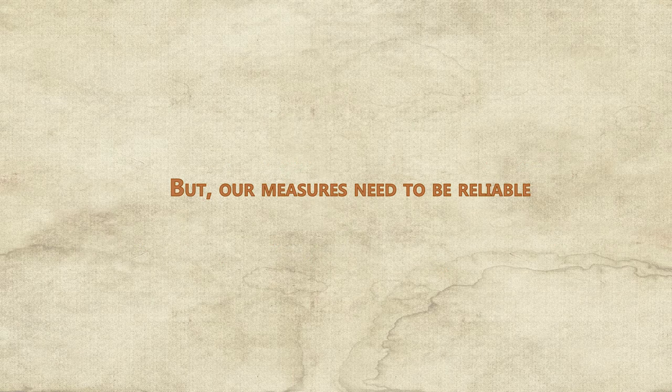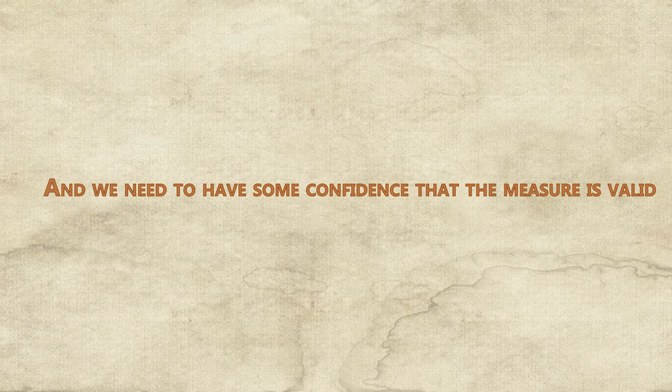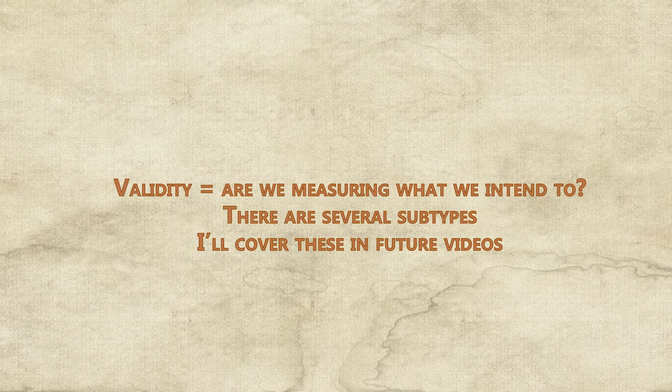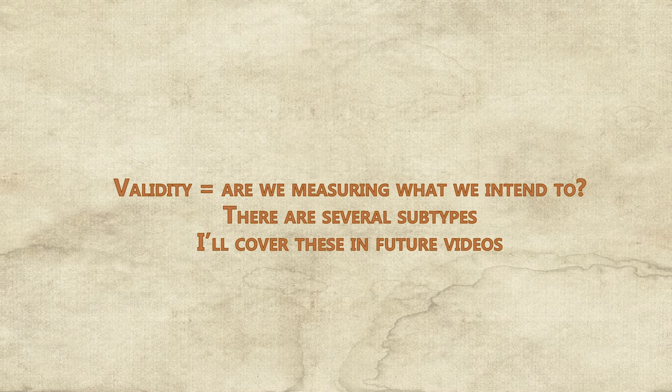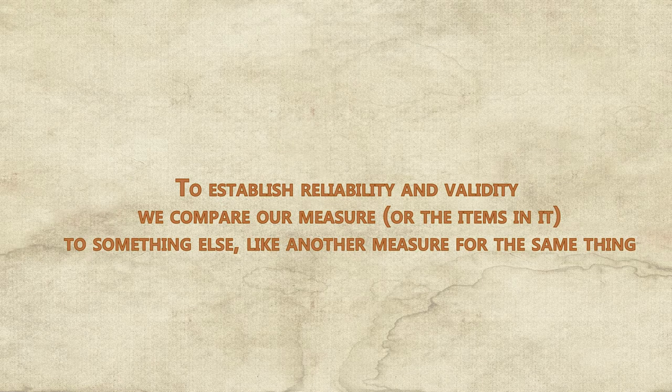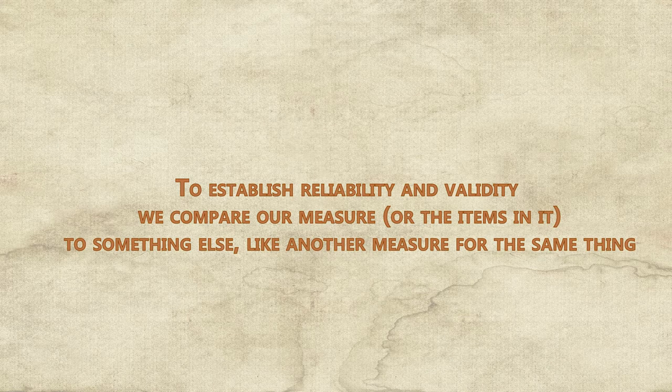To get a sense for the amount of error in a measurement, we need to know whether the measures provide consistent responses, and we have to try to validate that measure. So to be clear, reliability is the consistency of the measure. Validity is the degree to which we're measuring what we intend to, and both are measured in a relativistic sense. We only assess validity relative to something else, like another measure for the same variable.